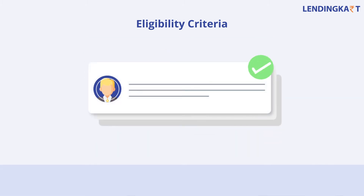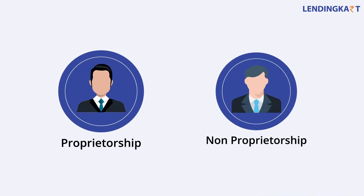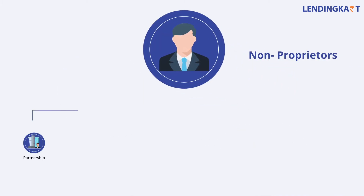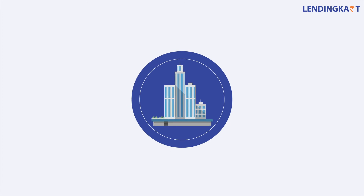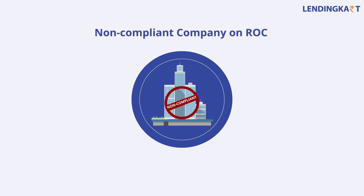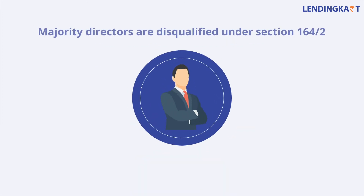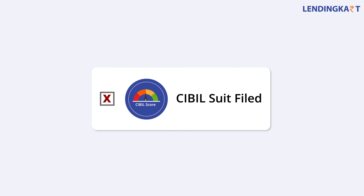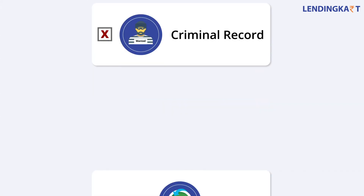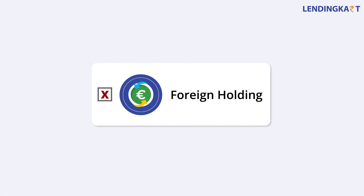Let's first understand the eligible borrowers. These can be any potential borrower, except a non-compliant company on ROC, one where majority directors are disqualified under Section 164(2), the applicant is under a civil suit, holds a criminal record, or has a majority foreign holding.